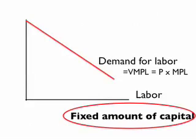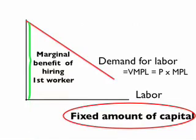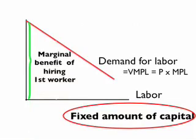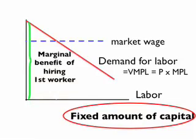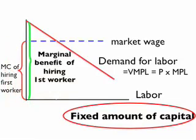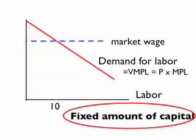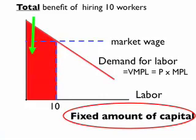Now let's consider the first unit of labor employed. The marginal benefit is the height of the demand curve. Imagine a market wage given to this competitive firm — that's the marginal cost of hiring the first worker. The firm will continue hiring until marginal cost equals marginal benefit, in this example equal to 10 units of labor, where the wage hits the demand curve. The total benefit of hiring those 10 workers is the area underneath the demand curve for labor, which is the sum of all individual marginal benefits — in other words, the total revenue from hiring those workers with the existing stock of capital.